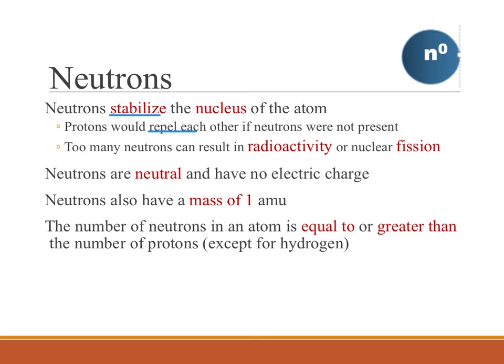But if there are too many neutrons present, then we end up with a radioactive atom, or that is an atom that is capable of undergoing nuclear fission, which is what we have in a nuclear reactor or a nuclear bomb.